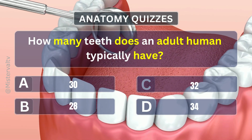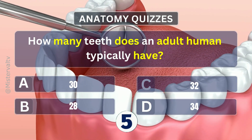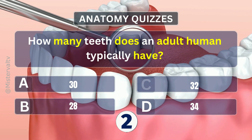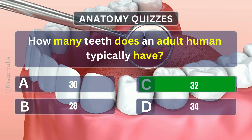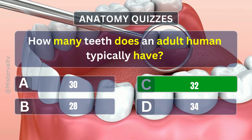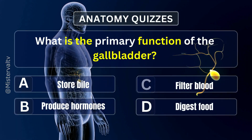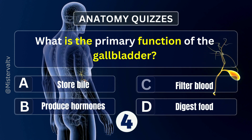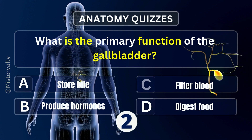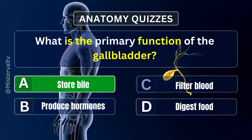How many teeth does an adult human typically have? Answer. C. 32. What is the primary function of the gallbladder? Answer. A. Store bile.